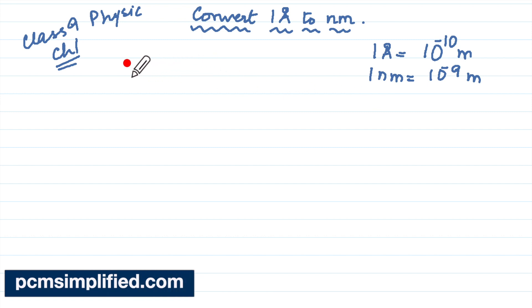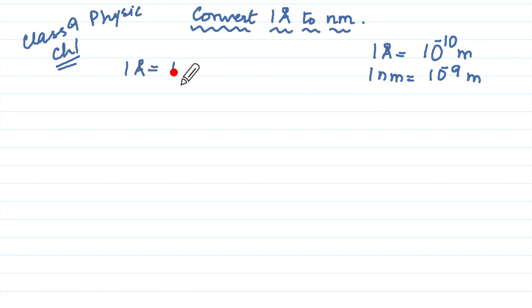So let us say we write one angstrom is equal to 10 to the power minus 10 meter, but we want it in terms of nanometer. For nanometer I need 10 to the power minus 9 meter, correct.